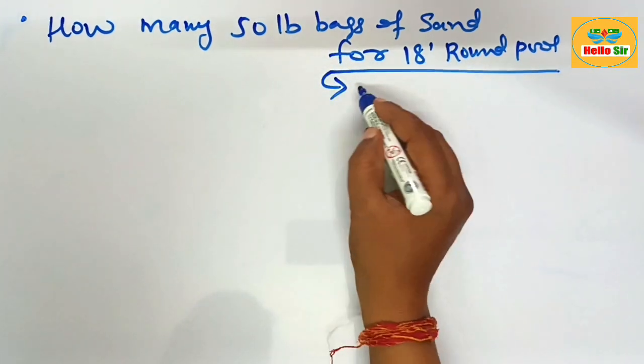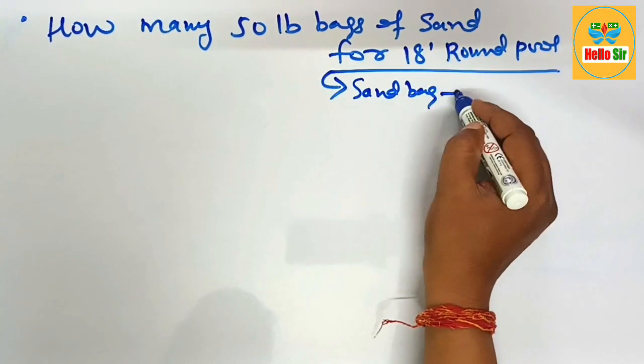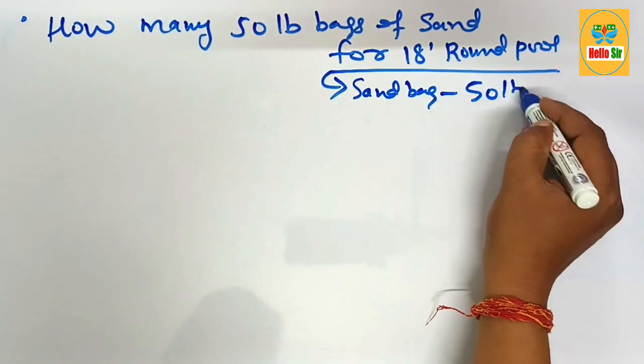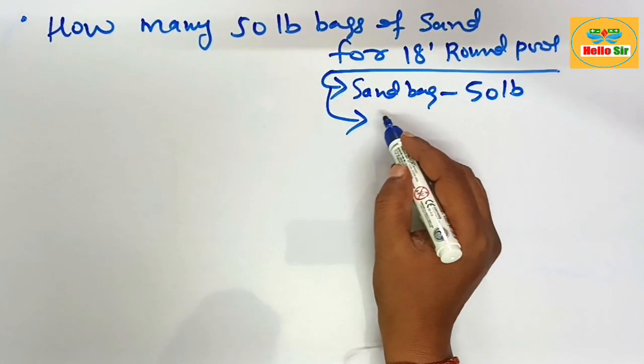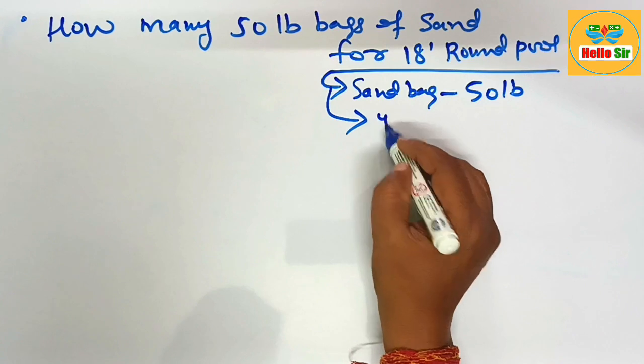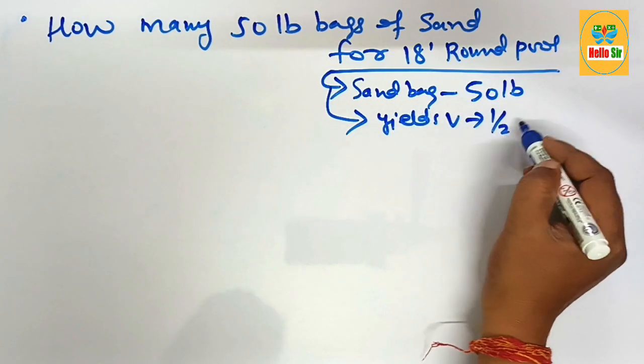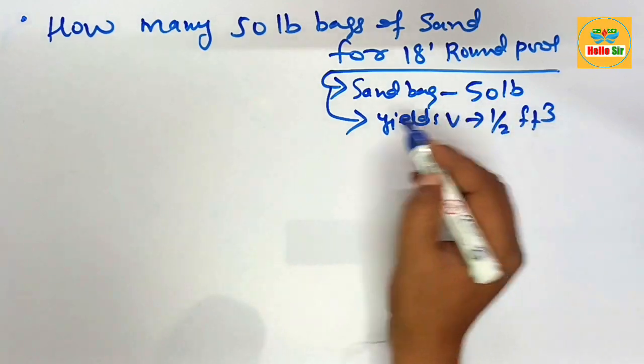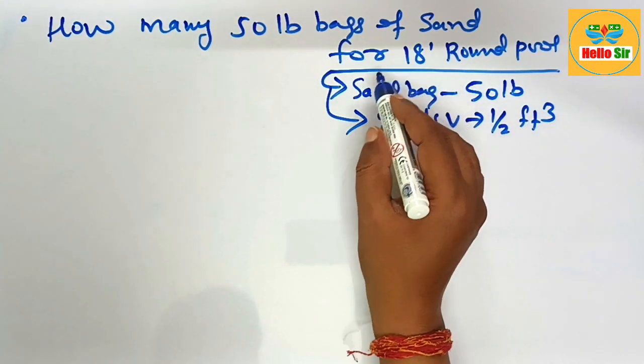You know that sand bags are sold in 50-pound bags, and each bag of 50-pound sand yields a volume of about half a cubic foot. Your swimming pool may be round in shape, rectangular, or oval.